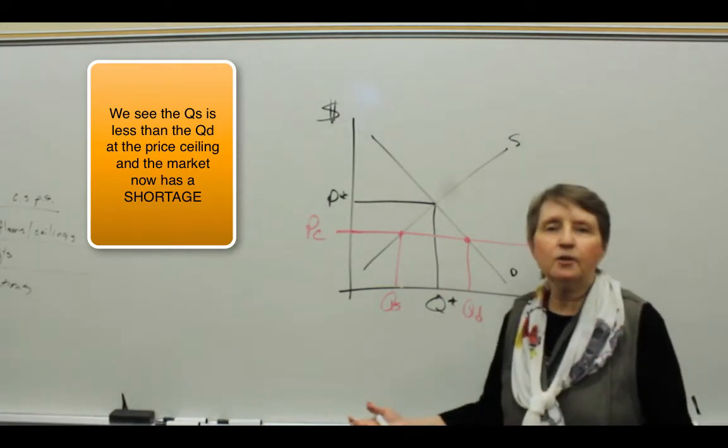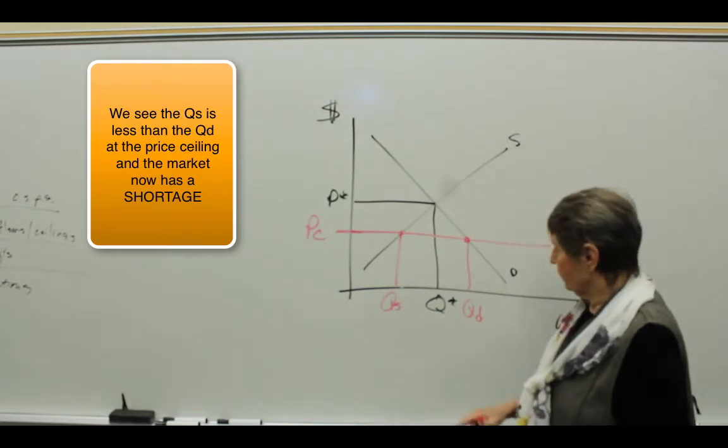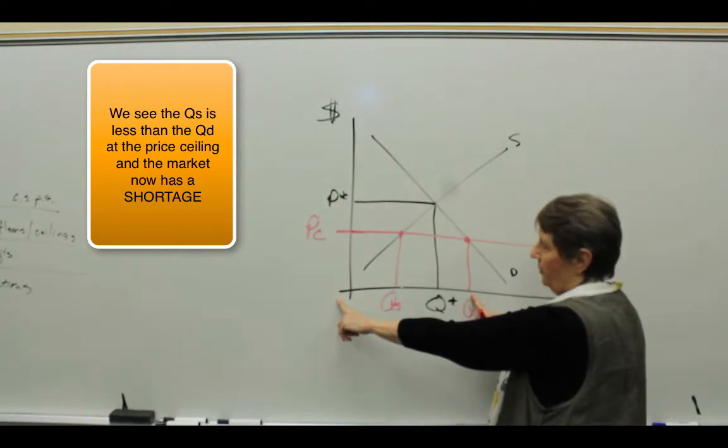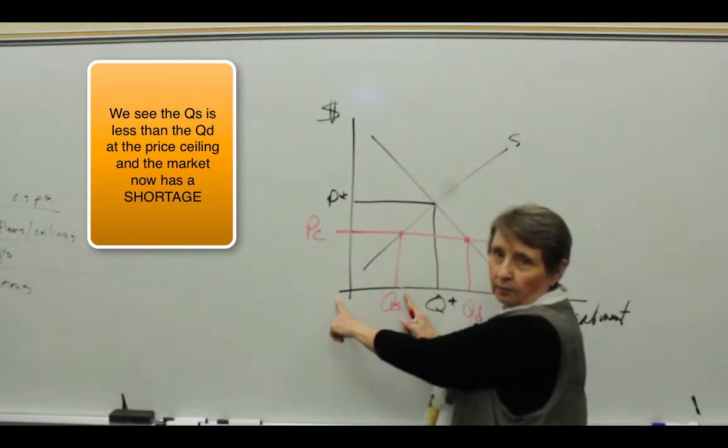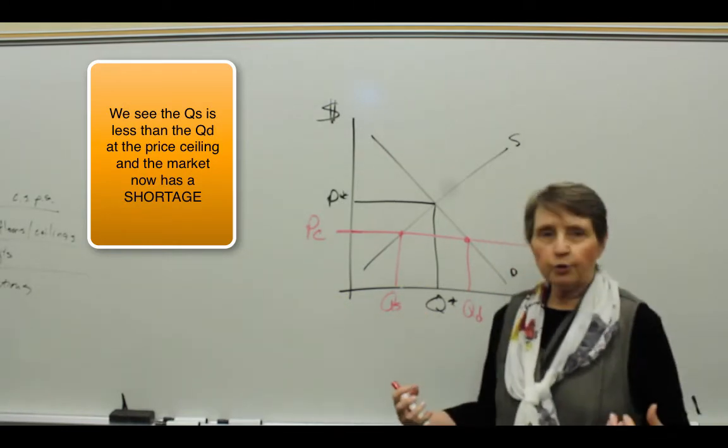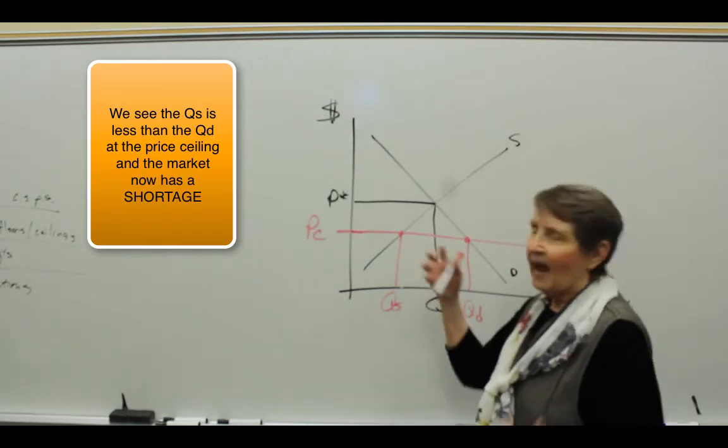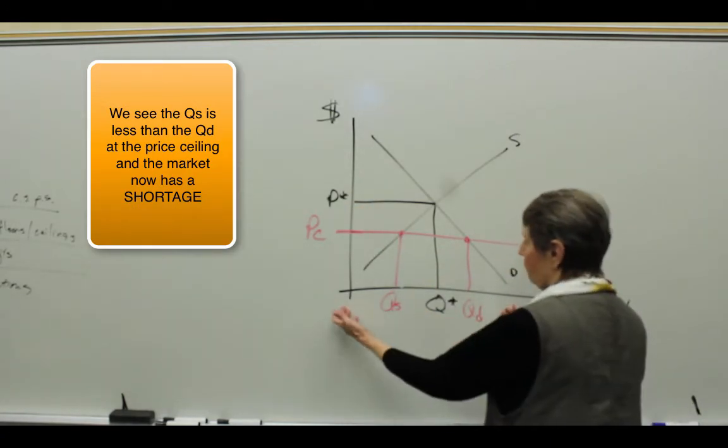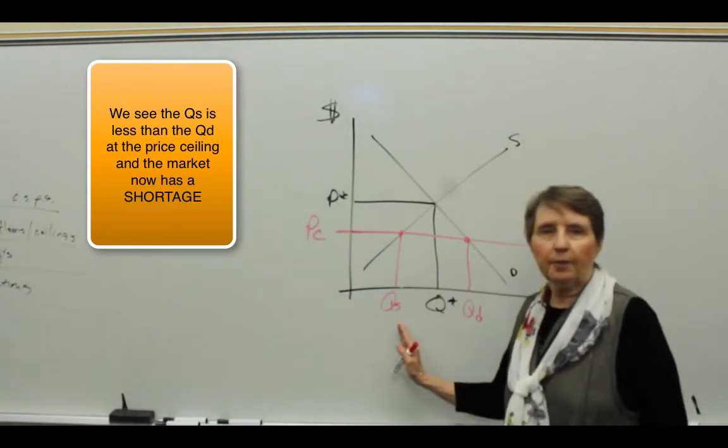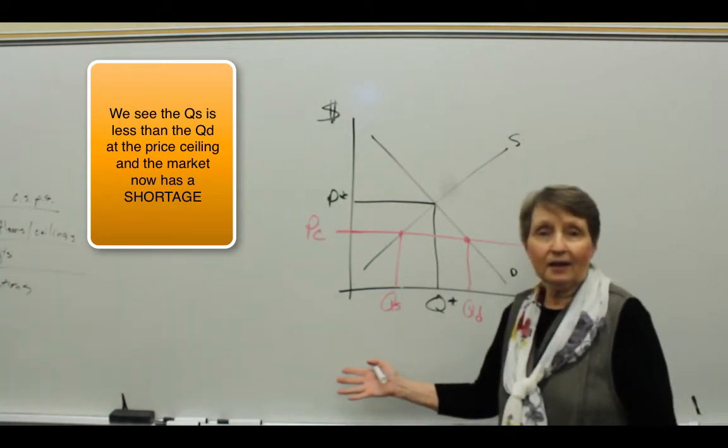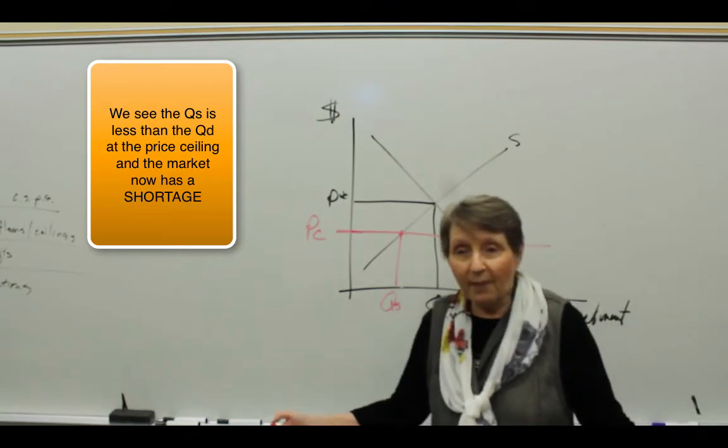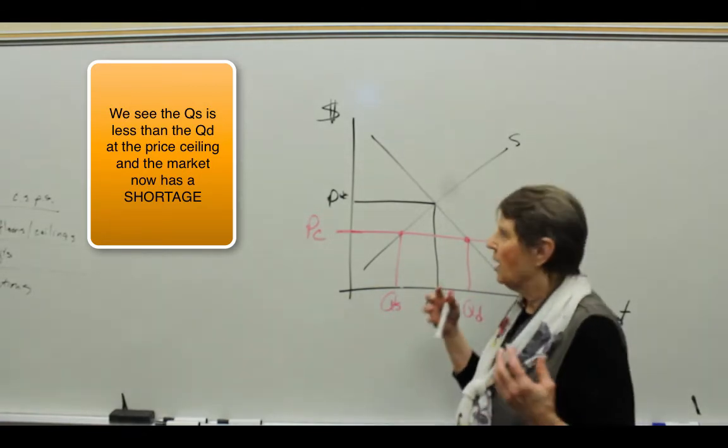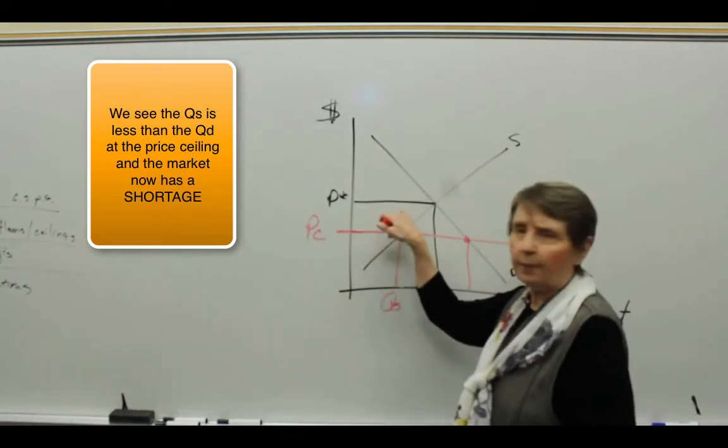And so now we have an allocation problem. The problem is we have this many people lined up who want an apartment, but we only have this many apartments available. So somehow the owners of these apartments are going to have to use something besides price to allocate the apartments. So you got a hundred people lined up and you got 50 apartments - which 50 people do we pick? Well, we probably look at their bank history, we look at their jobs, all kinds of things. So we use something other than 'are you willing and able to pay this price?'